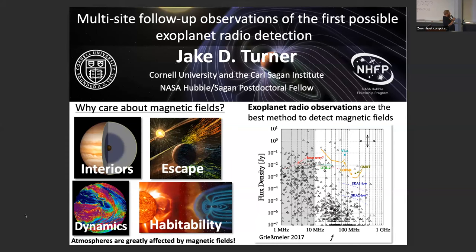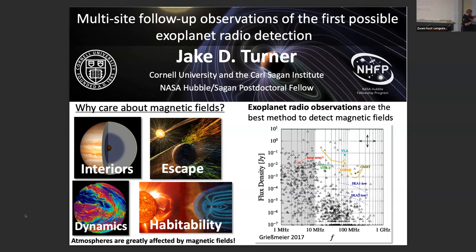Hello everyone. My name is Jake Turner. I'm a postdoc at Cornell University, and today I'm going to talk about magnetic fields. Why do we care about magnetic fields? A measurement lets you learn about interior structure, helping break degeneracies in the radius-mass diagram. It's also important for atmospheric escape, atmospheric dynamics — especially in ultra-hot atmospheres — and habitability, as well as star-planet interactions. The best way we think we can discover exoplanet magnetic fields is through radio observations. There are planets that fall above the sensitivity curves of currently known radio telescopes, so we're going after those objects.